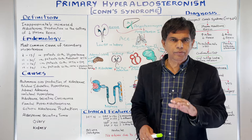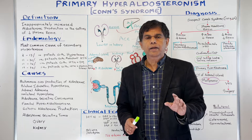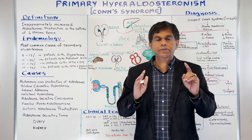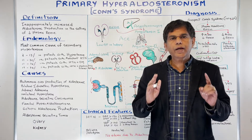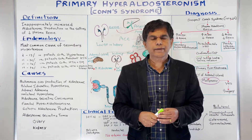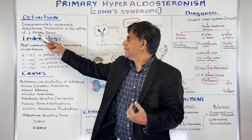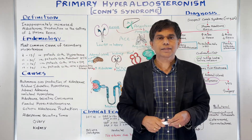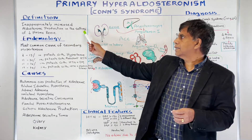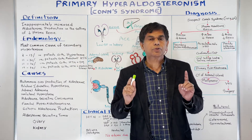Let's get into our topic today: primary hyperaldosteronism, also called Conn's syndrome. The first thing we have to do is define it. Hyperaldosteronism means increased aldosterone. Specifically, there is inappropriate secretion of aldosterone in the setting of decreased plasma renin. That is the definition of primary hyperaldosteronism or Conn's syndrome.